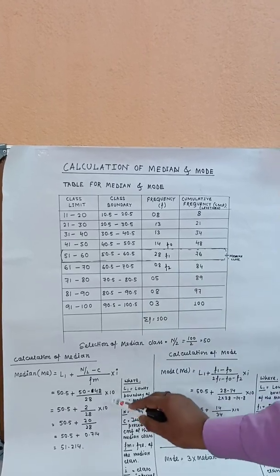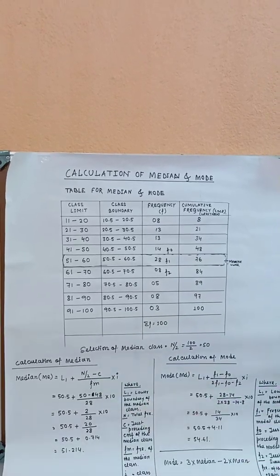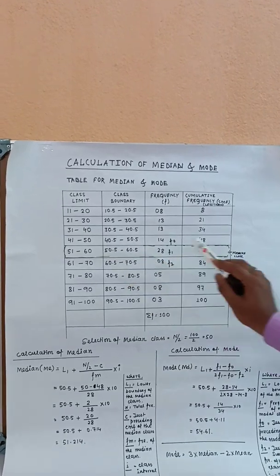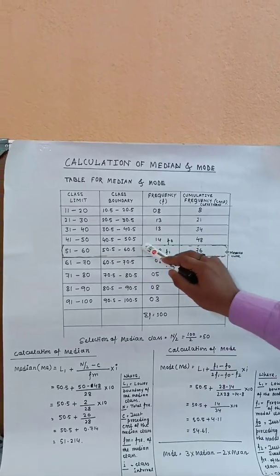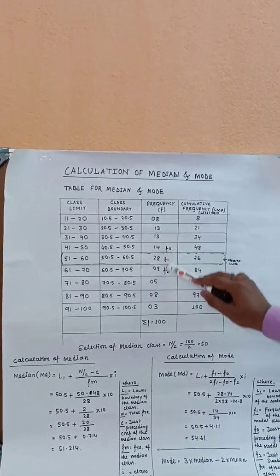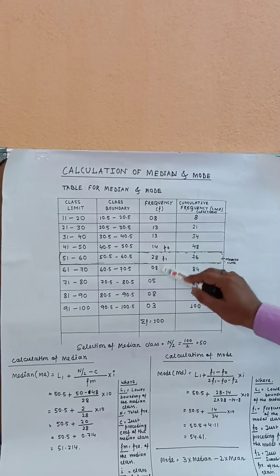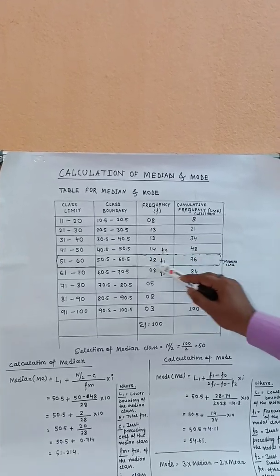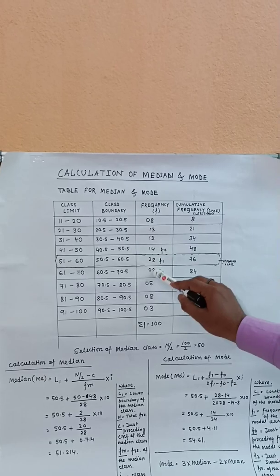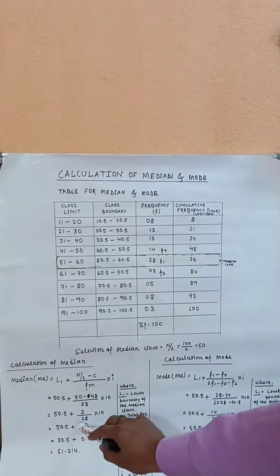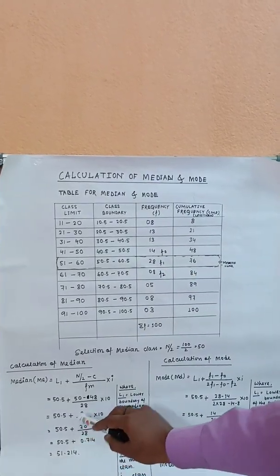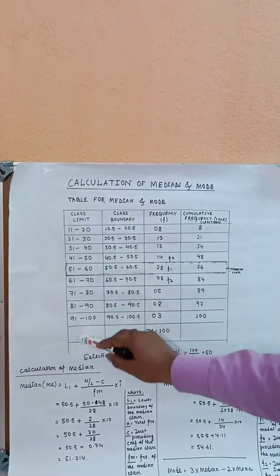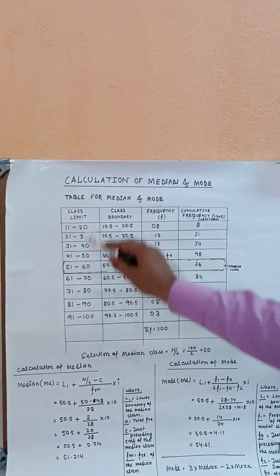fm is the frequency of the median class, which is 28. I is the class interval, which is 10. Putting these values into the formula gives us the median value.